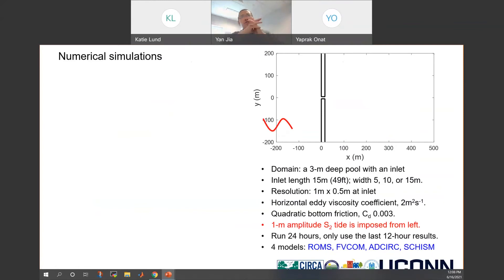The first step is to evaluate which model is more suitable to be used in the prediction model. In order to do that, I first test them based on an idealized swimming pool model. The swimming pool has a three-meter depth with two jetties sitting in the middle, forming an inlet. The inlet has a length of 15 meters, but the width can vary from five meters gradually to 15 meters. The tides are forced from the left side with one meter amplitude. It's a semi-diurnal tide with a period of 12 hours. We run all the models for 24 hours, cut off the first half, and only analyze the last 12 hours result.